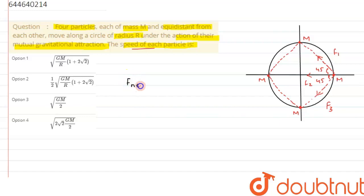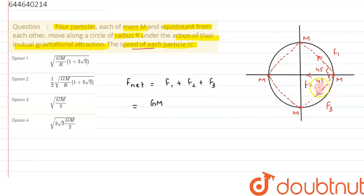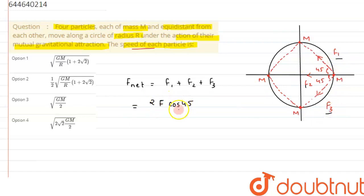The net force can be written as F1 + F2 + F3, which are all gravitational forces. If we resolve F1, it has one vertical and one horizontal component, and similarly for F3. The vertical components of F1 and F3 cancel each other. So for F1 and F3 together we can write: 2F cos45°, since by symmetry F1 and F3 are equal.